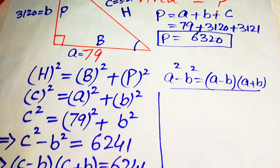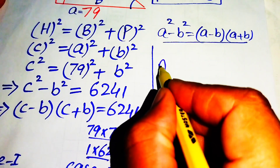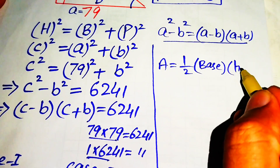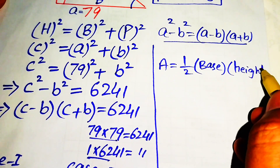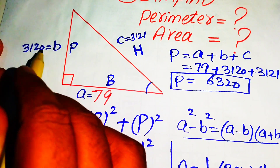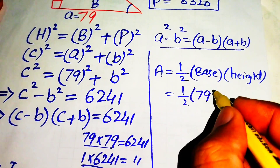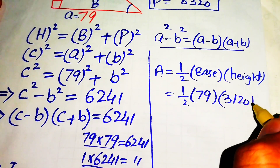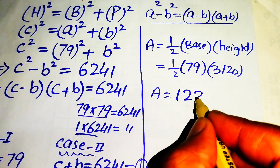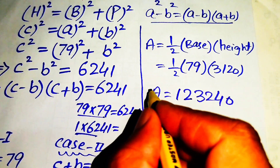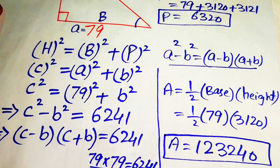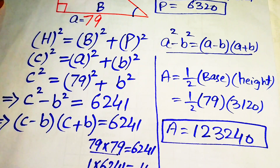To find the area, we use the formula: area = ½ × base × height. In this right triangle, the base is 79 and the height is the perpendicular side b = 3120. Substituting: area = ½ × 79 × 3120 = 123,240. This is the required area of the triangle. Thank you for watching — please subscribe to my channel for more videos.